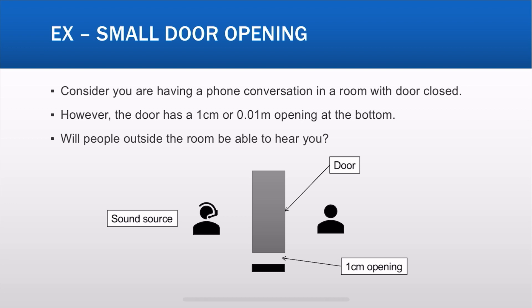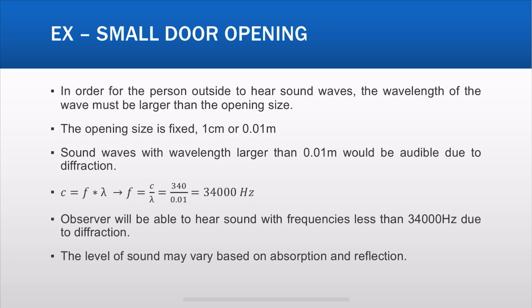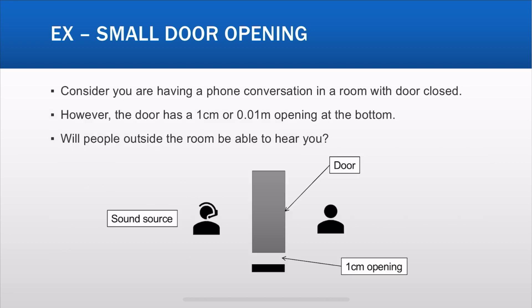The next example is about openings. Say you're inside a room having a phone conversation with the door closed, but the door has an opening of 1 centimeter or 0.01 meter at the bottom. Will people outside be able to hear you? For diffraction to occur, the wavelength must be larger than this opening size. Plugging in the speed of sound, we get a frequency of 34,000 Hertz — beyond the human hearing range. So the observer will be able to hear sounds with frequencies less than 34,000 Hertz due to diffraction, which is essentially everything in the human hearing range of 20 Hz to 20 kHz. This means people on the other side can hear everything, though the level may vary due to absorption and reflection.